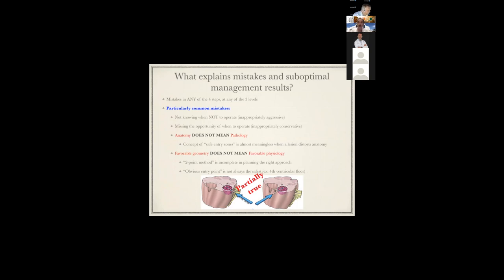These are mistakes I have made in my 25 years of practice, and mistakes I've seen others make with brainstem cavernoma. First mistake: not knowing when not to operate - being inappropriately aggressive. Second mistake: missing the opportunity to operate - being inappropriately conservative. Another mistake: anatomy does not mean pathology. The concept of safe entry zones is meaningless when there is a lesion in the brainstem that has distorted the anatomy and given you a new path if it reaches a surface.